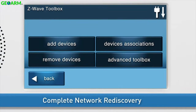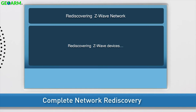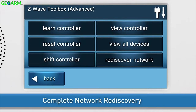To initiate a Network Rediscovery, navigate to the Z-Wave Toolbox, then press Advanced Toolbox. Press Rediscover Network. The panel will display a message that it is rediscovering the Z-Wave devices, then automatically redirect you back to the Advanced Z-Wave Toolbox.